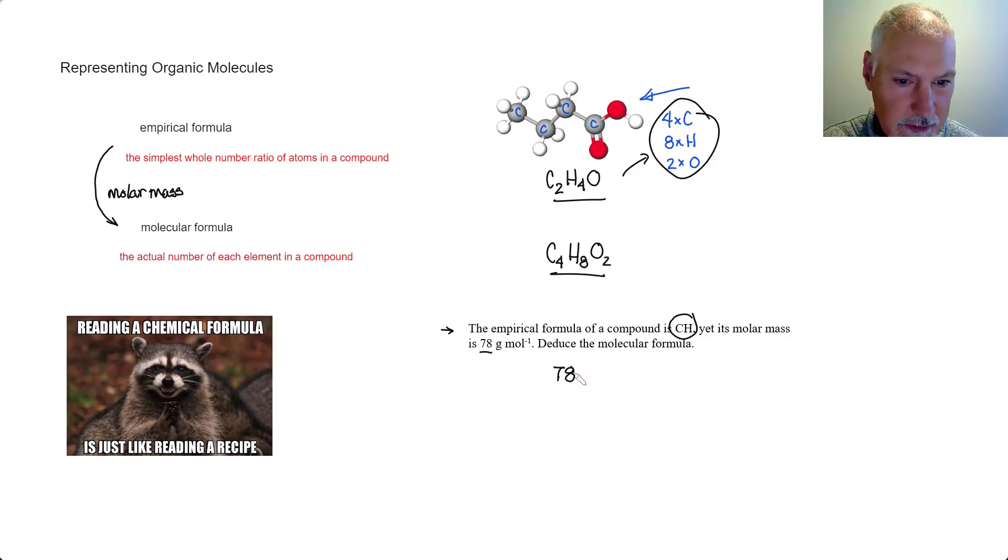So the total is 78, and that's equal to a carbon, which is 12, and a hydrogen, which is 1, times N. So solving here, 13N is 78. N here would equal 6. That means that the actual molecular formula would be 6 times that, or C6H6. Benzene.